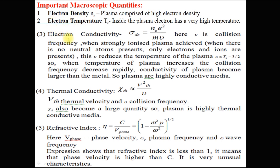The third macroscopic quantity is electrical conductivity, shown by the equation sigma_dc equal to Ne into e squared upon m times mu, where mu is the collision frequency. When strongly ionized plasma is achieved — when there is no neutral atom present and only electrons and ions are present — mu reduces approximately as Te to the power of minus 3 by 2. So when the temperature of plasma increases, the collision frequency decreases rapidly, and conductivity of plasma becomes larger than that of a metal. Thus plasma is a highly conductive medium.